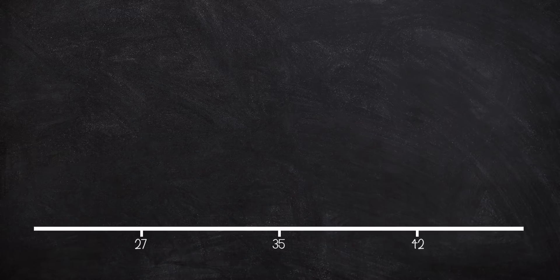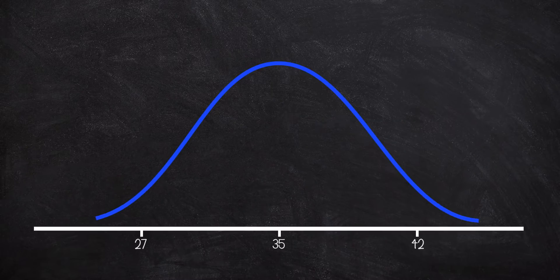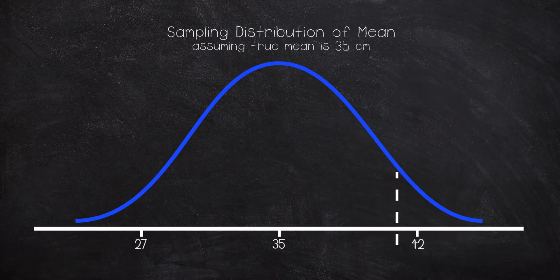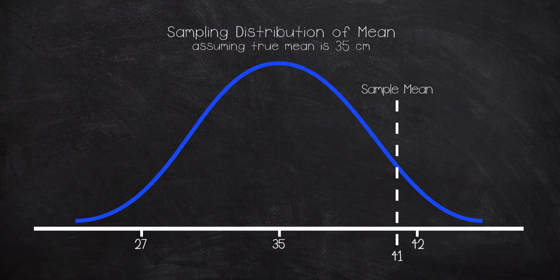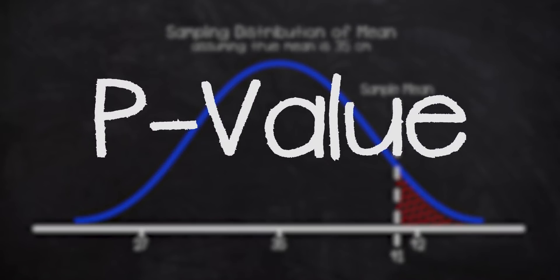Recall we've taken a sample of 25 fish from the lake and found them to have a sample mean length of 41 centimeters. We can then ask the following question: under our null hypothesis that the true population mean length of fish is 35 centimeters, what is the chance that we end up with a sample mean length of 41 centimeters or more? This probability is the p-value. If we were to calculate this probability, we would find that it's approximately one percent, or one in a hundred.